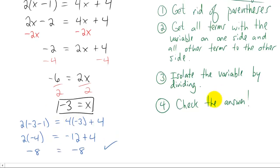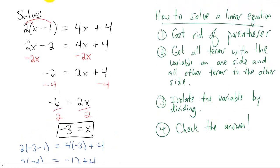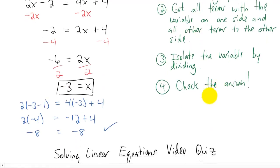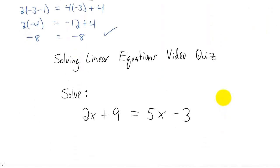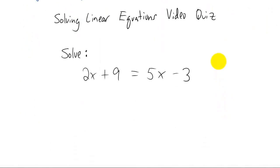That is our answer, and you should always check your answer. To keep this video from getting too long, let's stop there and give you a quiz. Solve the equation 2x plus 9 equals 5x minus 3. Good luck.